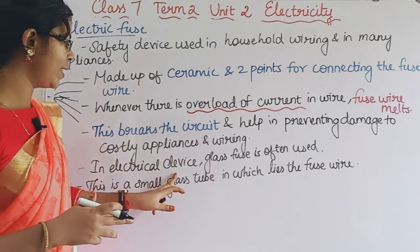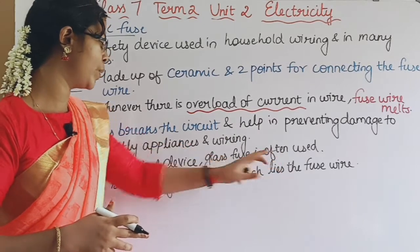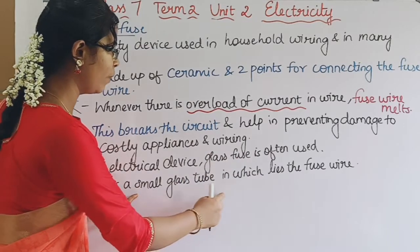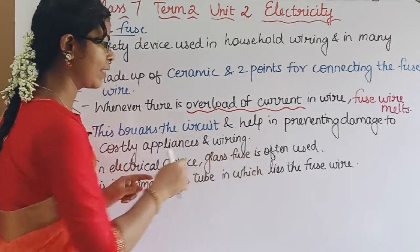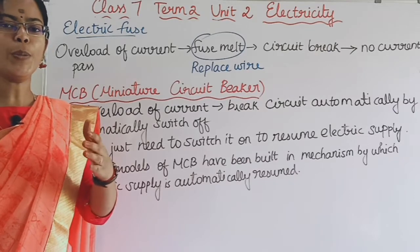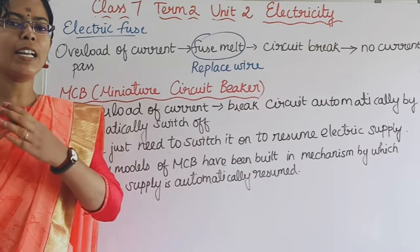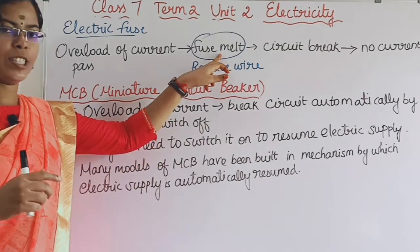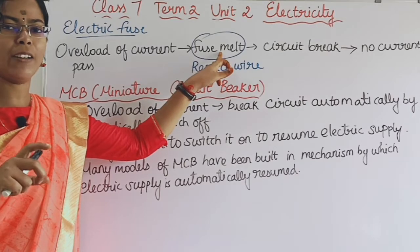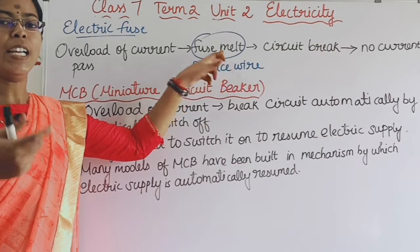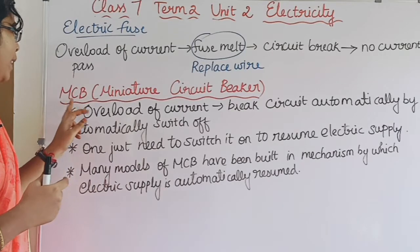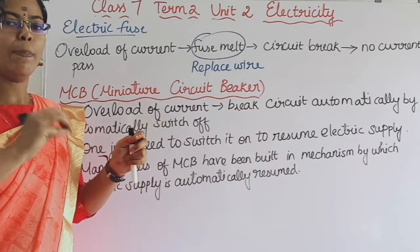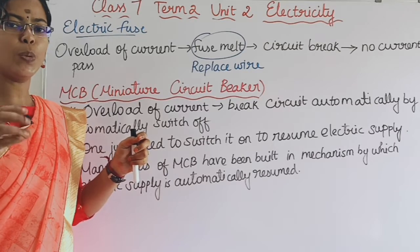In electrical devices, a glass fuse is often used. This is a small glass tube in which the fuse wire lies. When there is an overload of current, the fuse wire will melt and the switch will automatically turn off.